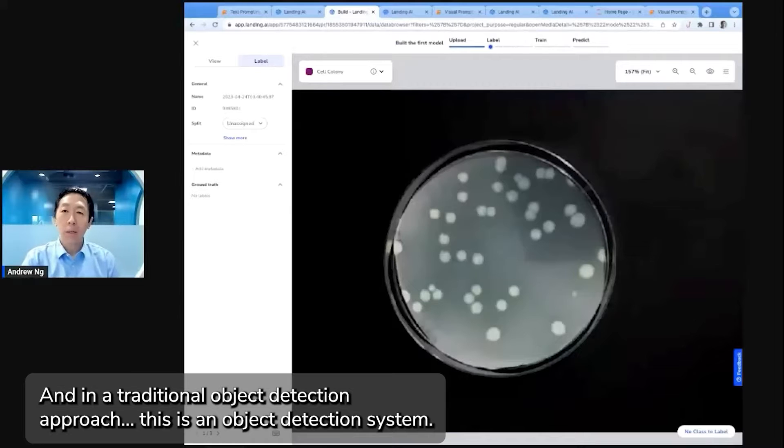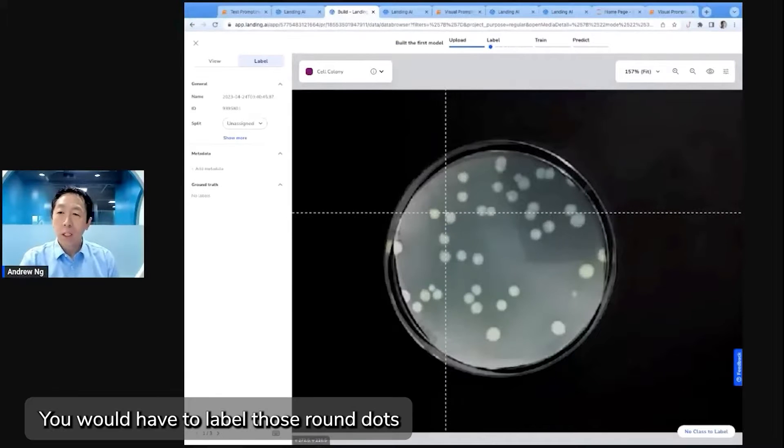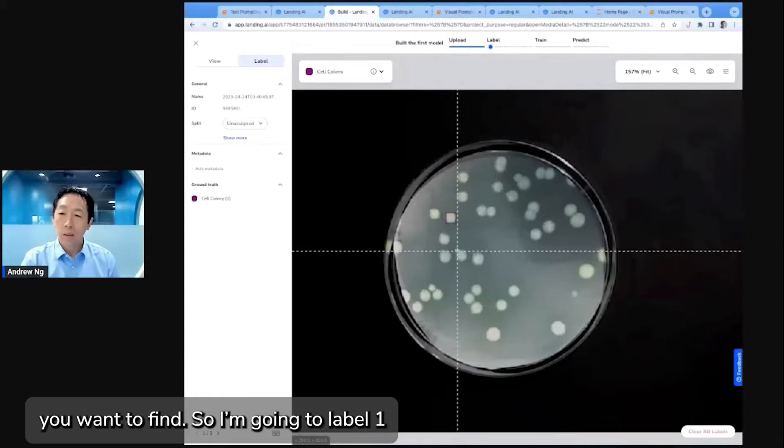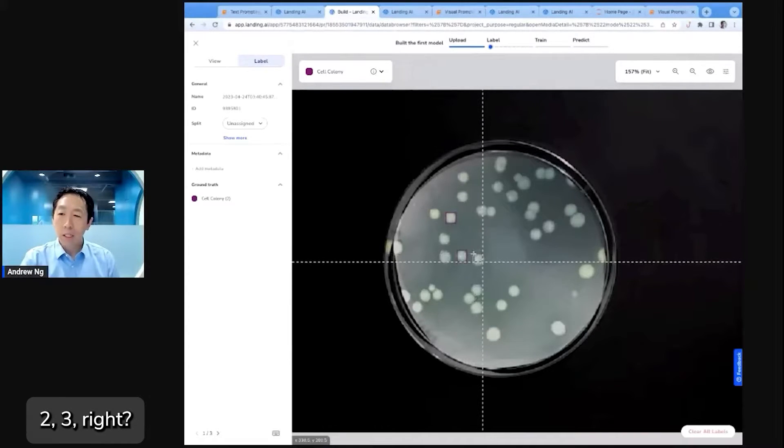In a traditional object detection approach, this is an object detection system, you would have to label those round dots you want to find. So I'm going to label one, two, three.